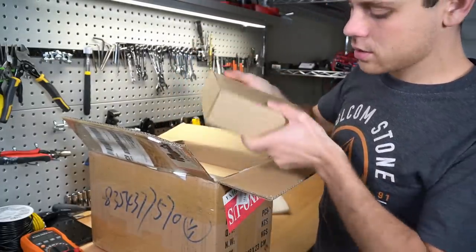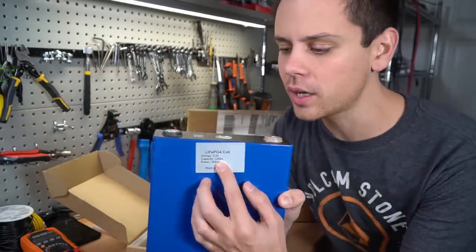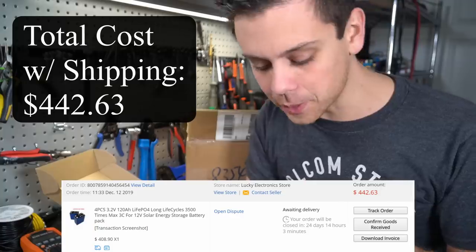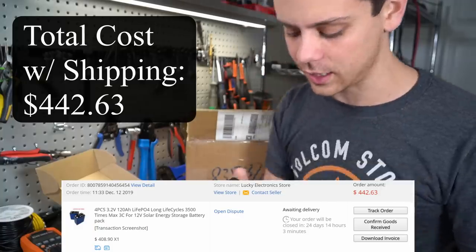Oh, this is weird. Check it out. It's a 120 amp hour cell. These are actually the super cheap aluminum cased cells that I've been wanting to test out.